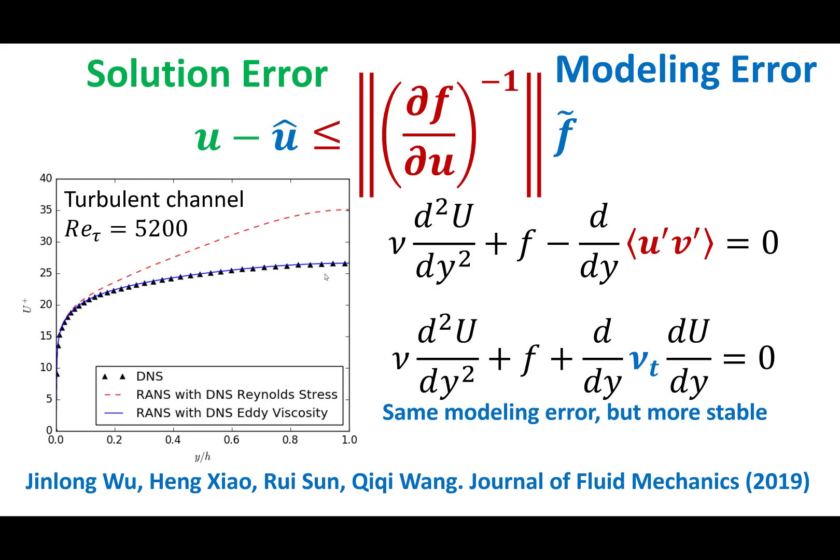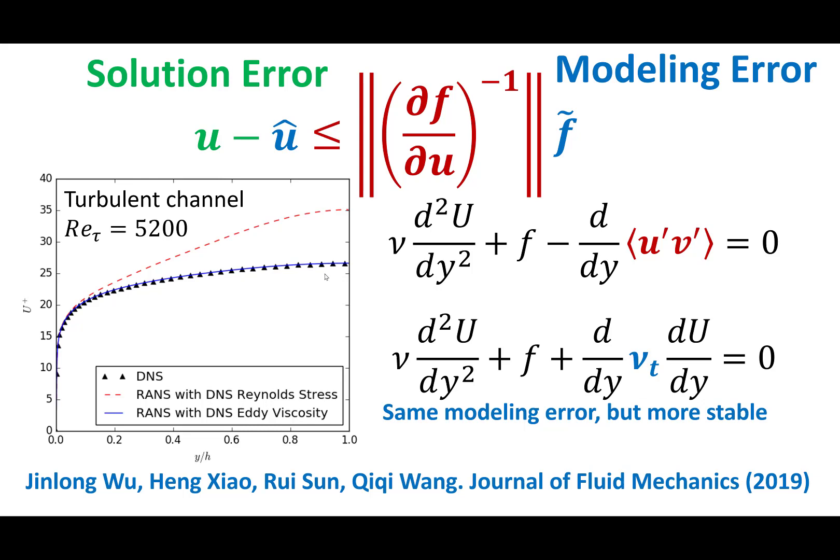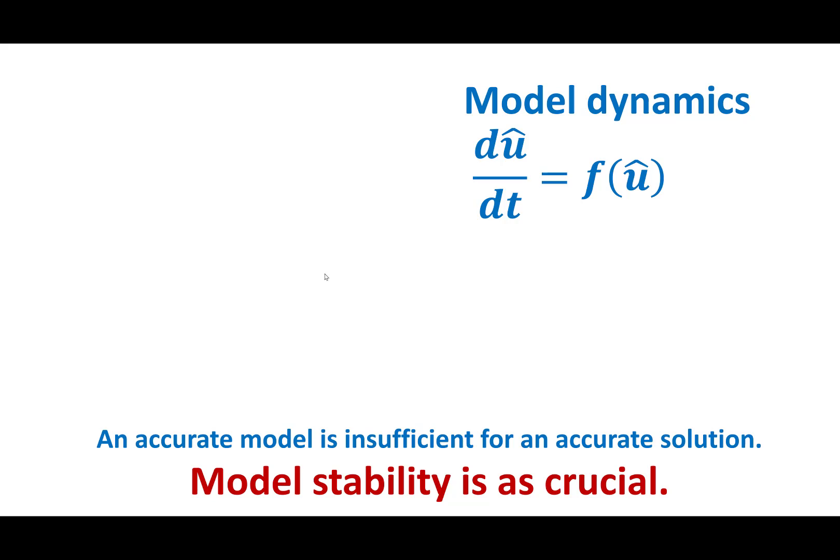The norm of the inverse of the operator is much smaller for the classical turbulent-viscosity-based model. This tells you that model stability is at least as crucial as minimizing the modeling error — which has really been the focus of attention for many modern machine-learning approaches that try to just minimize the modeling error while paying very little attention to model stability. In this course, we will be focusing on model stability. Model stability is a lot trickier if you have a dynamical model — for example, a differential equation, ODE, or PDE in the case of turbulence.